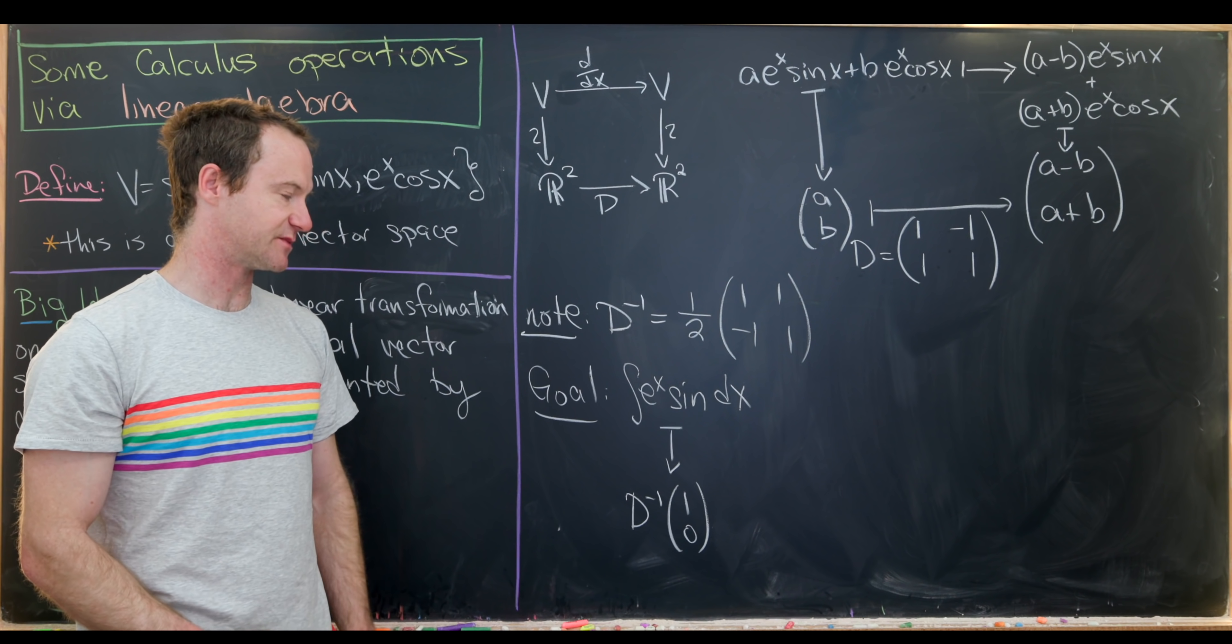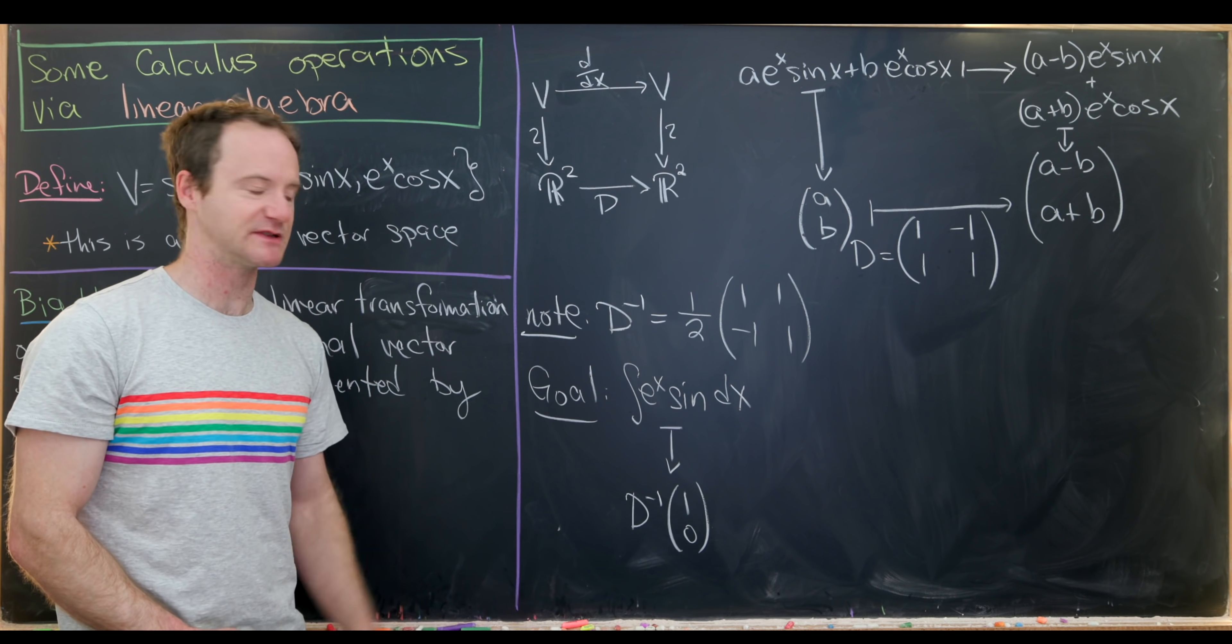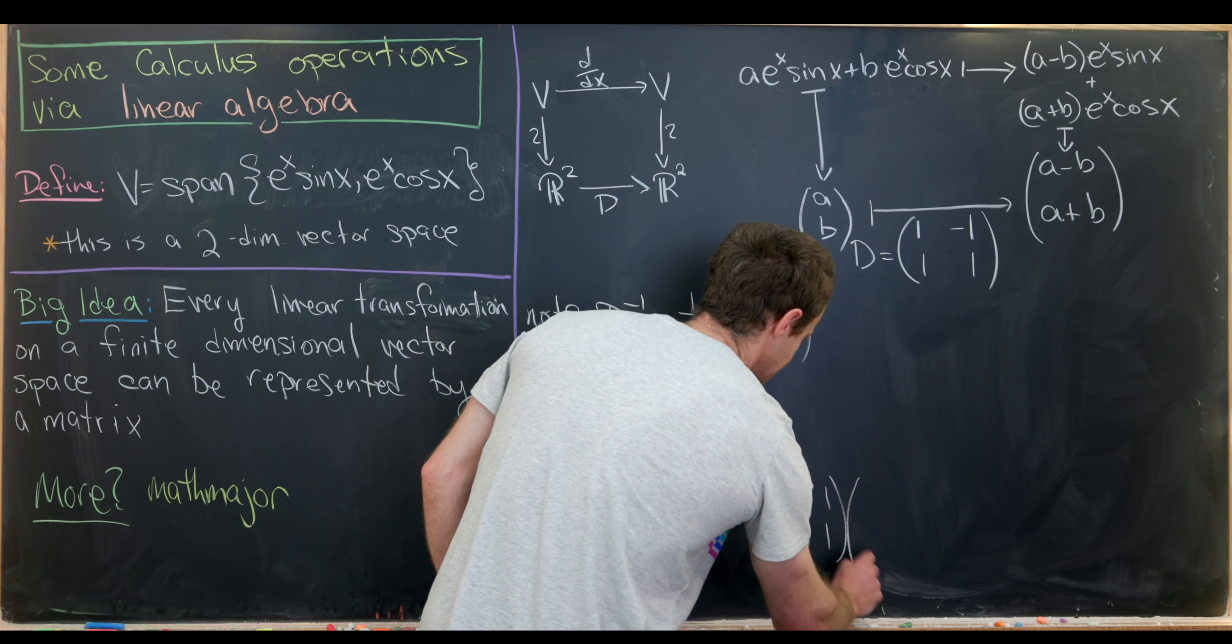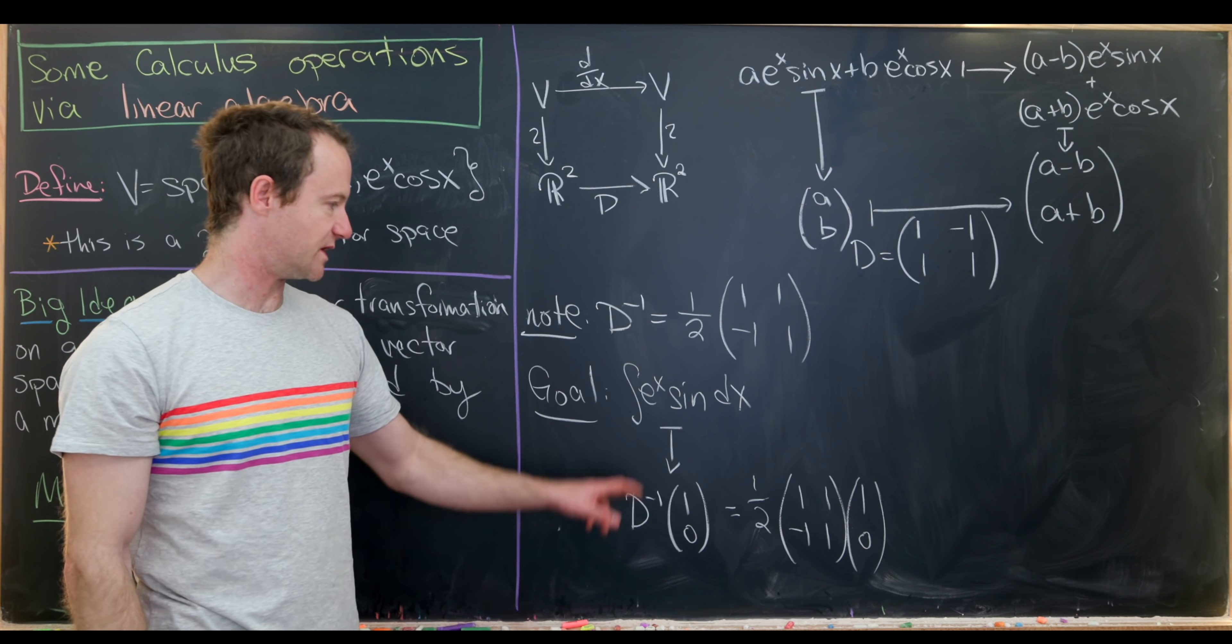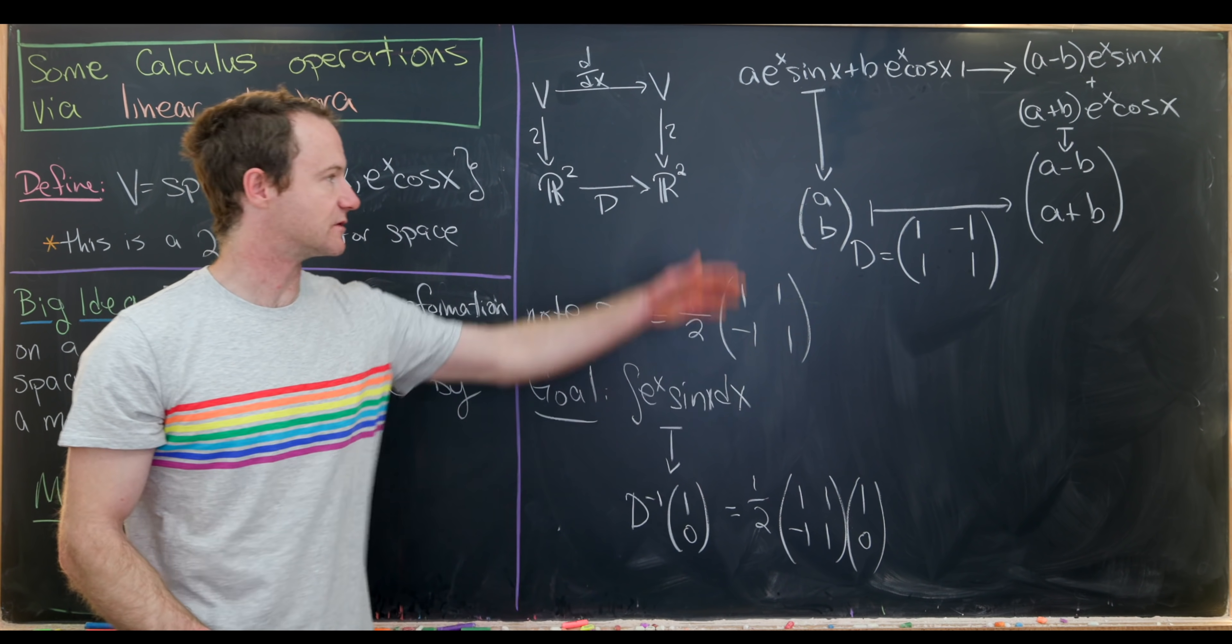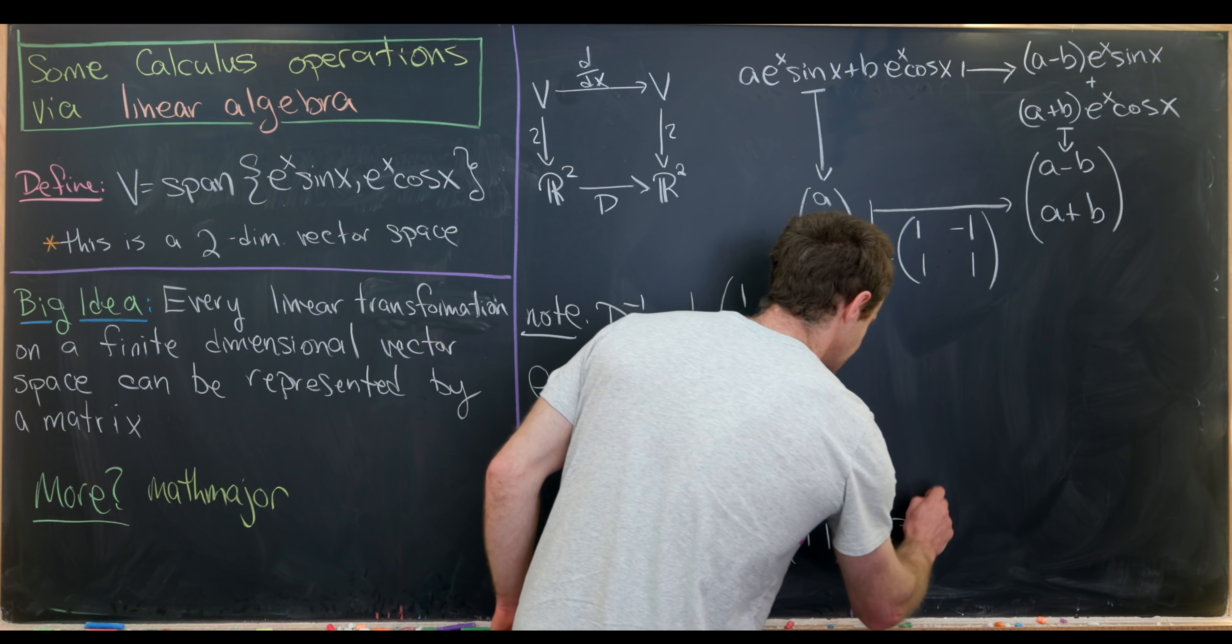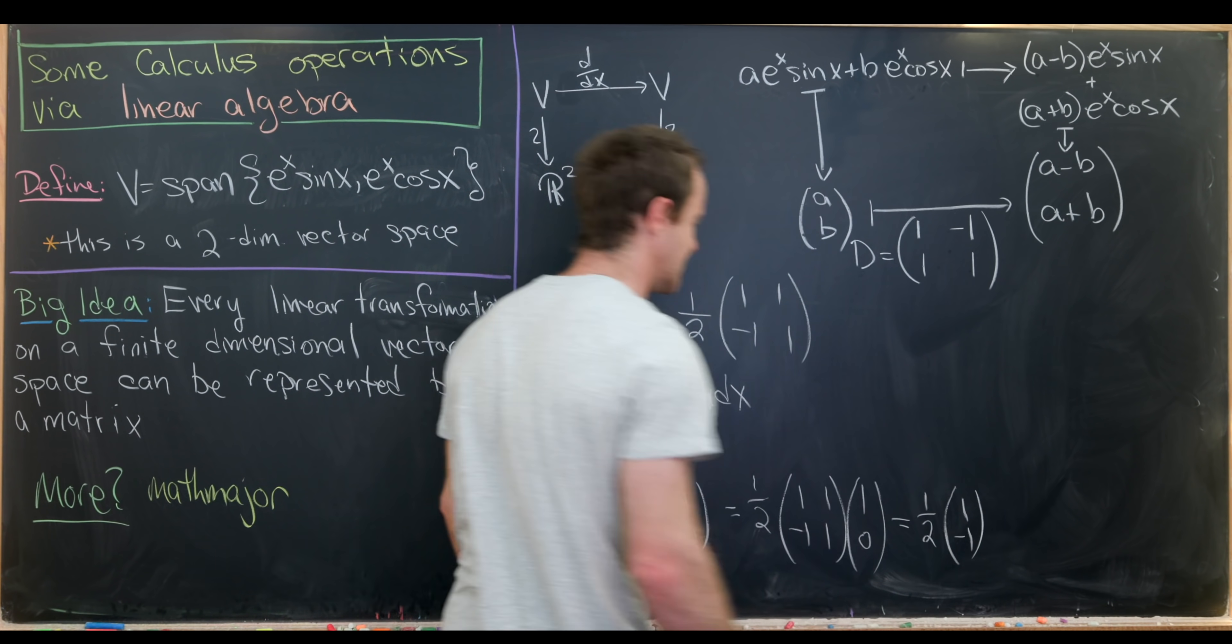Let's match this with, let's see, D inverse applied to 1, 0. So we match it to D inverse applied to 1, 0 because taking an antiderivative is like the opposite of taking the derivative. But let's notice that that is equal to 1 half times 1, 1, minus 1, 1 times the vector 1, 0. I guess I should point out we're using the vector 1, 0 here because e to the x sine x corresponds to the vector 1, 0 by how we've chosen this map. But now we can do matrix multiplication here. And matrix multiplication will give us 1 half times the vector 1, minus 1.